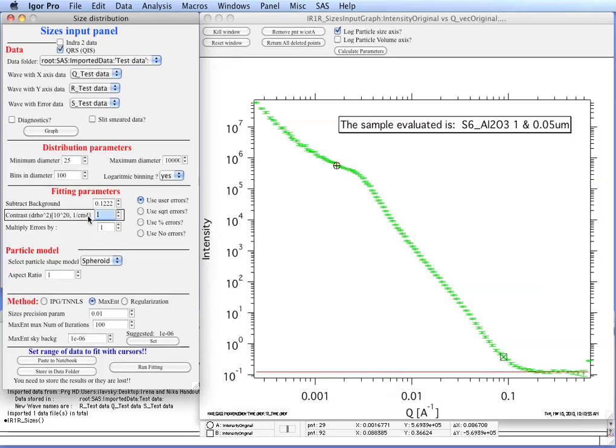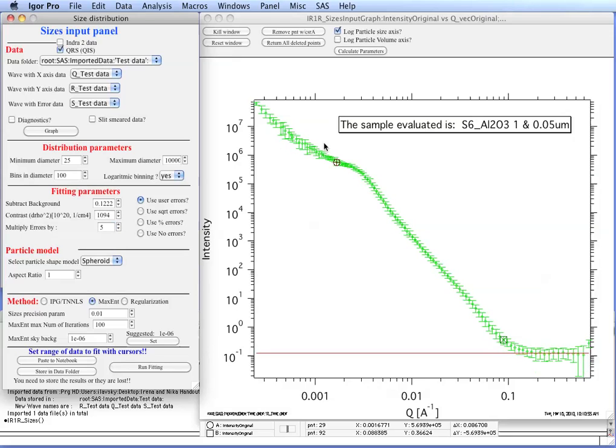Contrast for alumina is 1491, I believe. Let me check on that - 10094 actually. Even though this is powder and the absolute intensity here is probably not well calibrated, because for powders that is very difficult to do, this is the real contrast of alumina against air. For a start there, let's increase the scaling factor to maybe 5. That increases the error bars and makes it easier for the code to reach a solution within error bars.